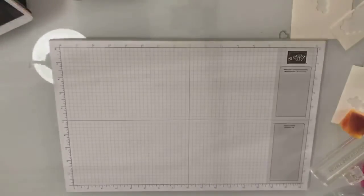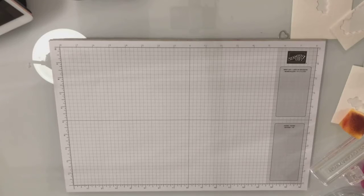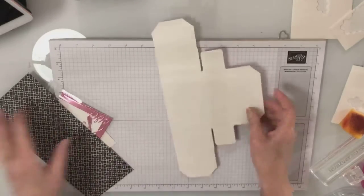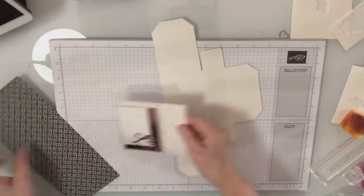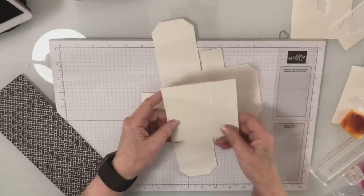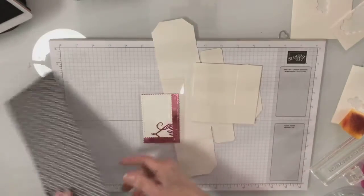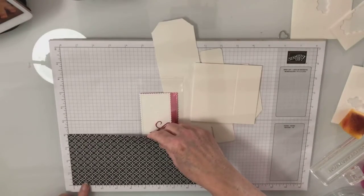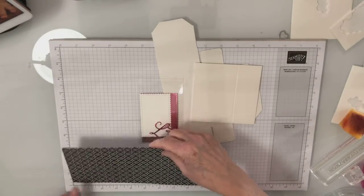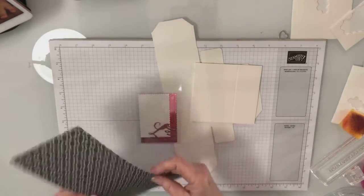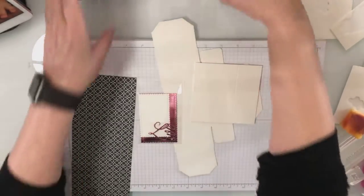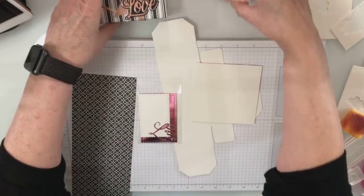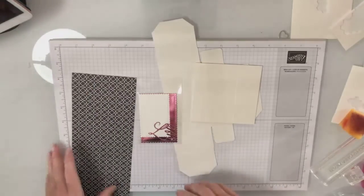I'm going to move those out of the way. In your packet there's the box and the lid, which is what this is. You'll need to cut this at nine and a half by four, whichever designer series paper you're using. You'll need to cut it at nine and a half by four.